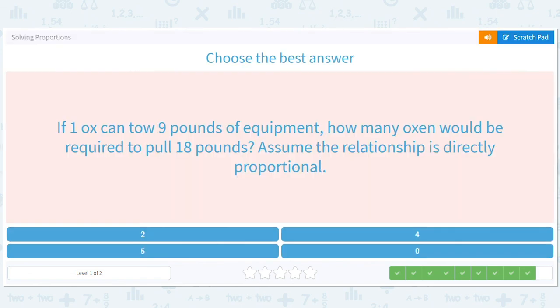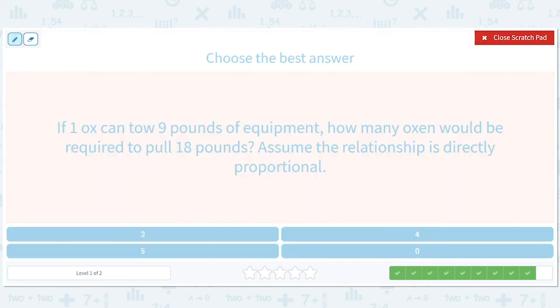If one ox can tow nine pounds of equipment, how many oxen would be required to pull 18 pounds? Okay. Again, we could just see it's two. But we'll do one ox divided by nine pounds equals how many oxen divided by 18. 18 equals 9x. Divide both sides by two and you get x equals two.